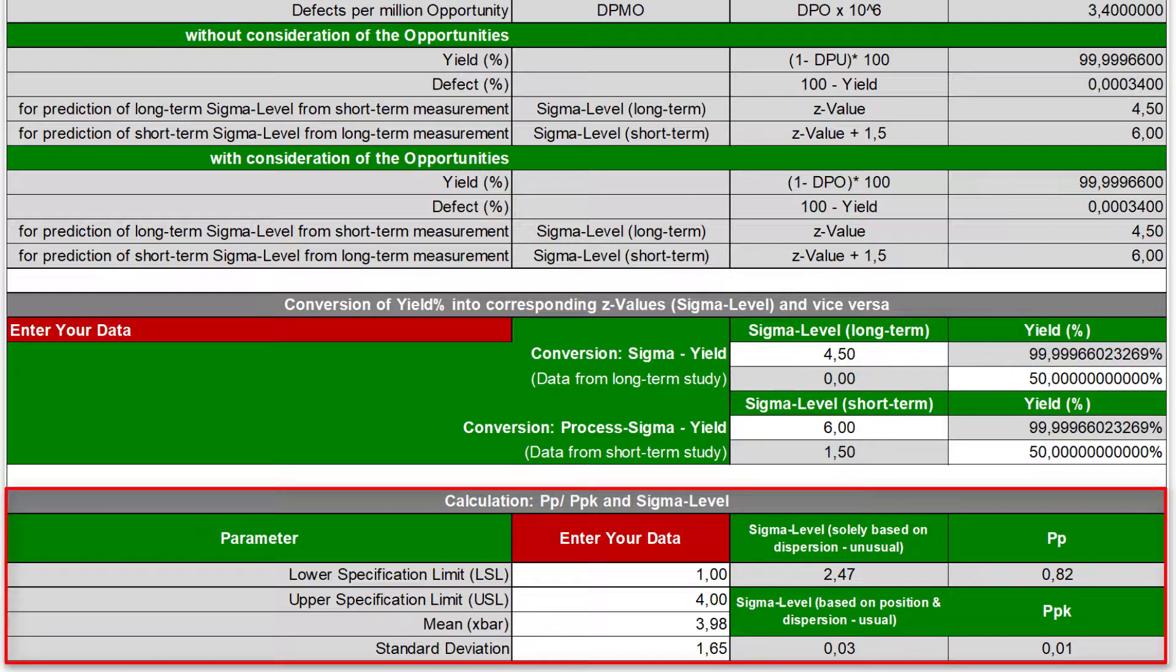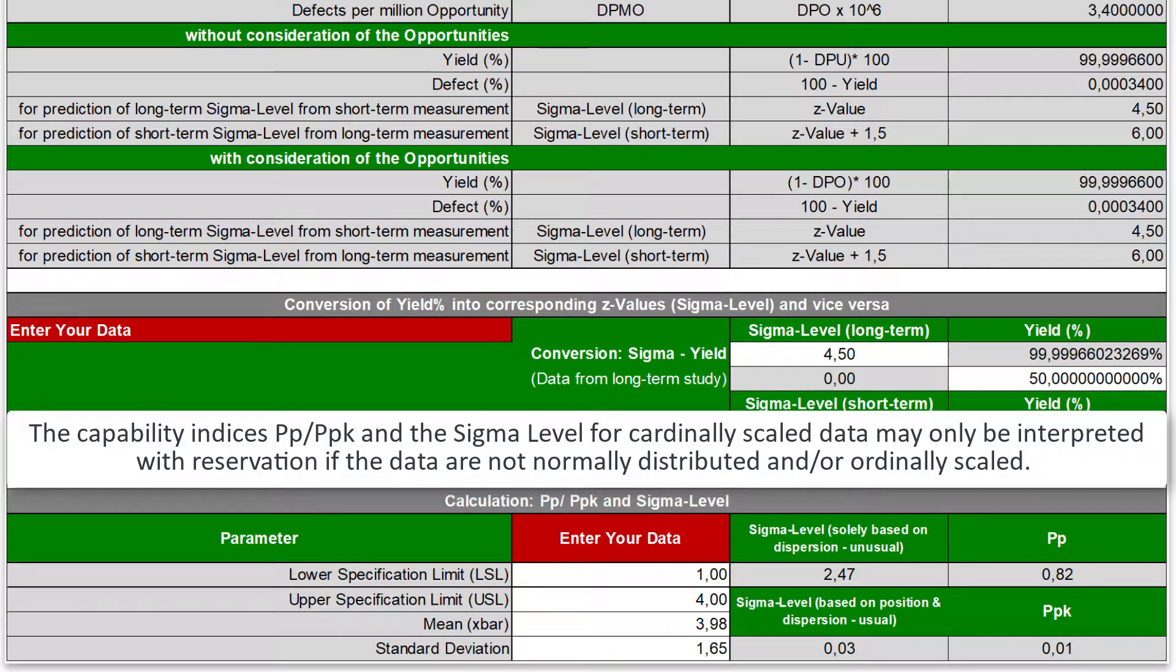If your data is cardinally scaled, normally distributed, and if the specification limits are set, then you can calculate the PP-PPK capability indices and the corresponding sigma level. In our case, however, the data is only ordinarily scaled and not normally distributed. Therefore the indices may only be interpreted with reservation.